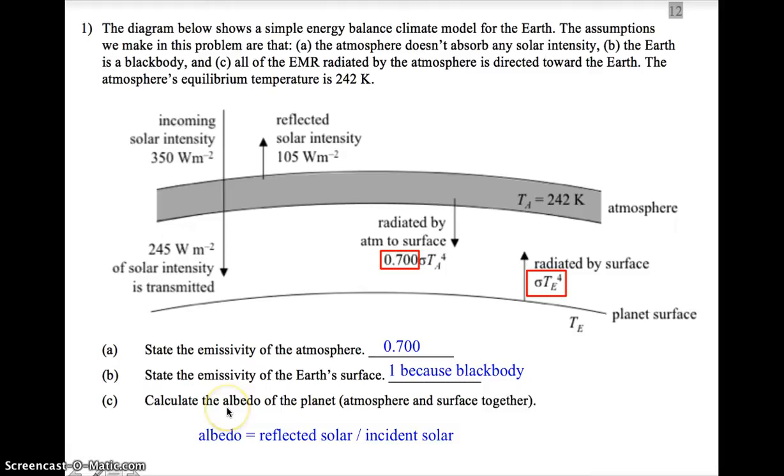Finally, we calculate the albedo of the planet, which includes the atmosphere and surface together. The albedo formula is reflected solar radiation divided by incident solar radiation. We can use intensity in equations. So what's the reflected solar intensity? It's this amount. What's the incident? It's this amount. Notice that nothing is reflected off the surface. Why not? Because we assume the surface is a black body, and all of the radiation on a black body is absorbed. None is reflected. So we do 105 over 350, and that gives 0.30.